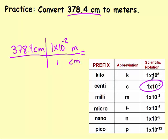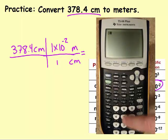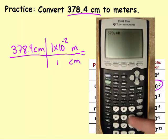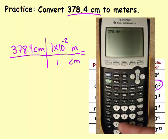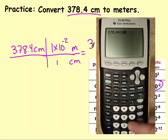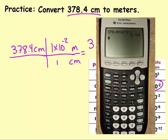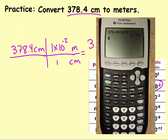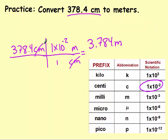They're next to each other, so I'm going to multiply. 3.784 times 1E negative 2. Don't forget your units of meters. I have four significant figures to start with and end with, so I'm done.